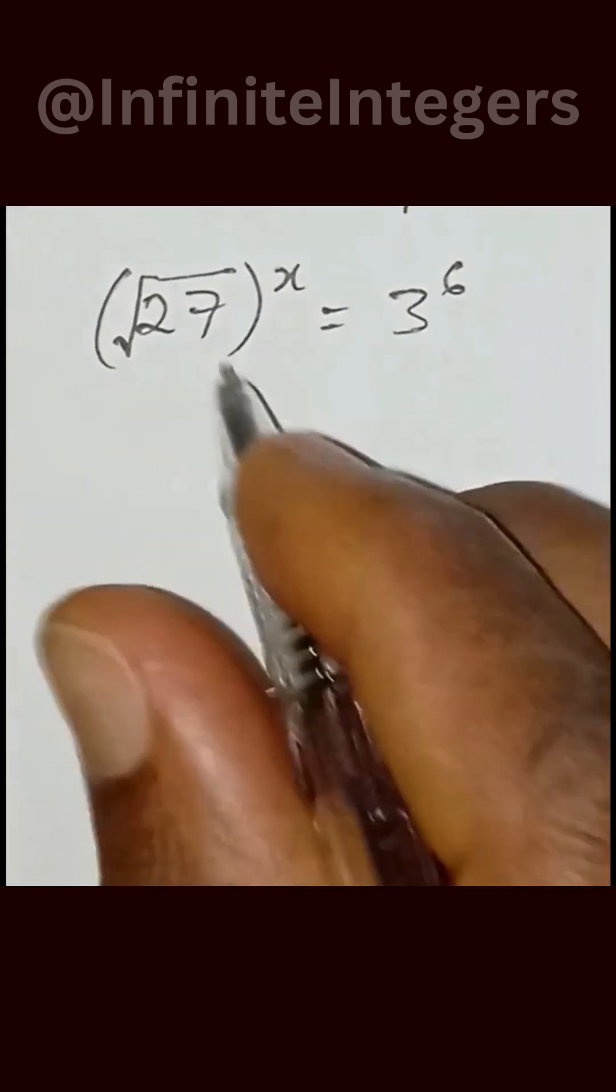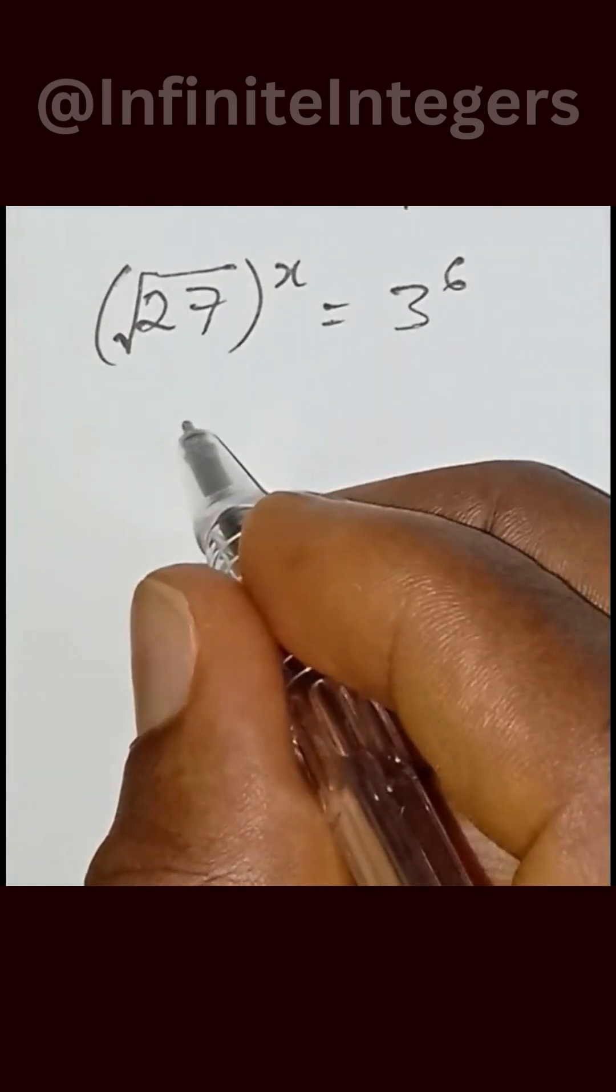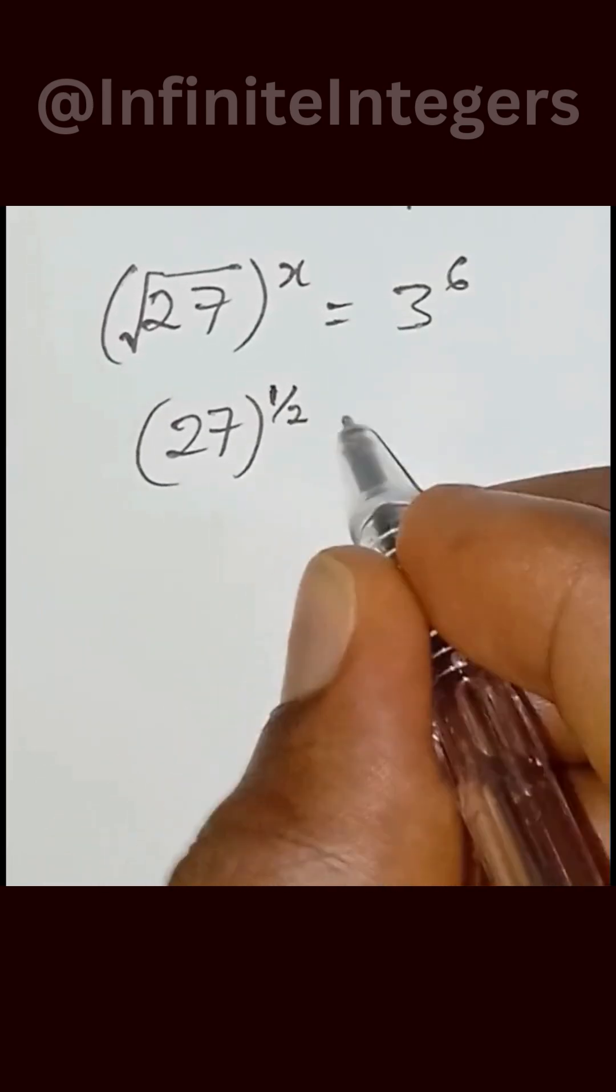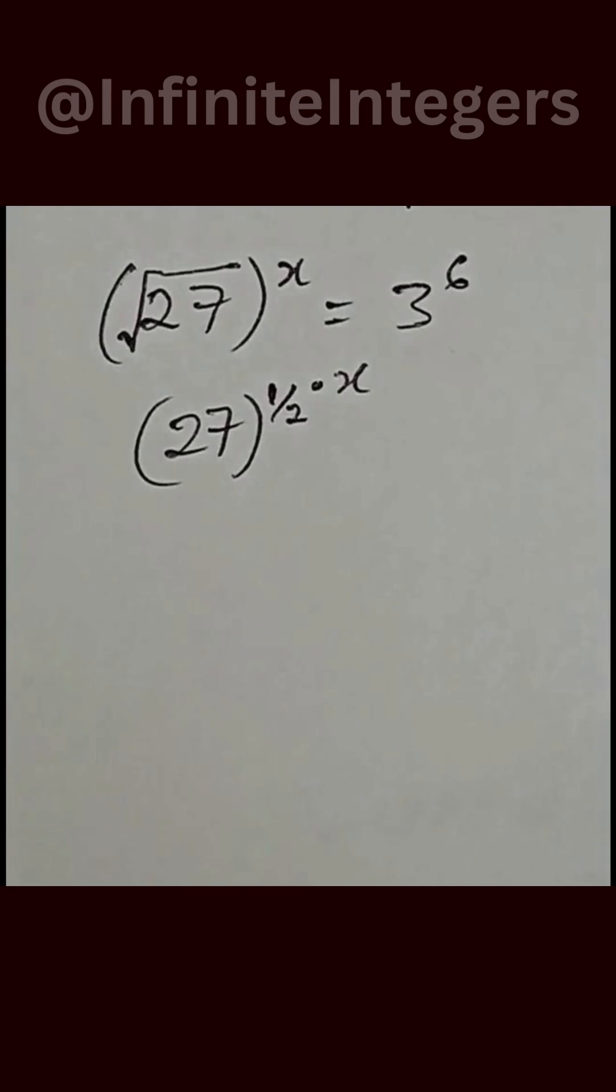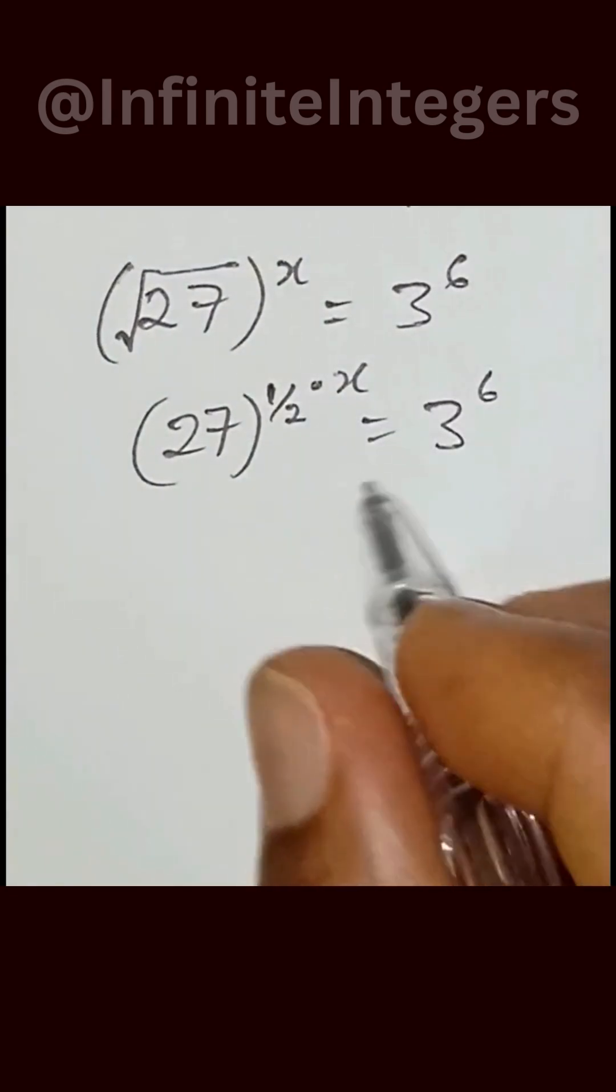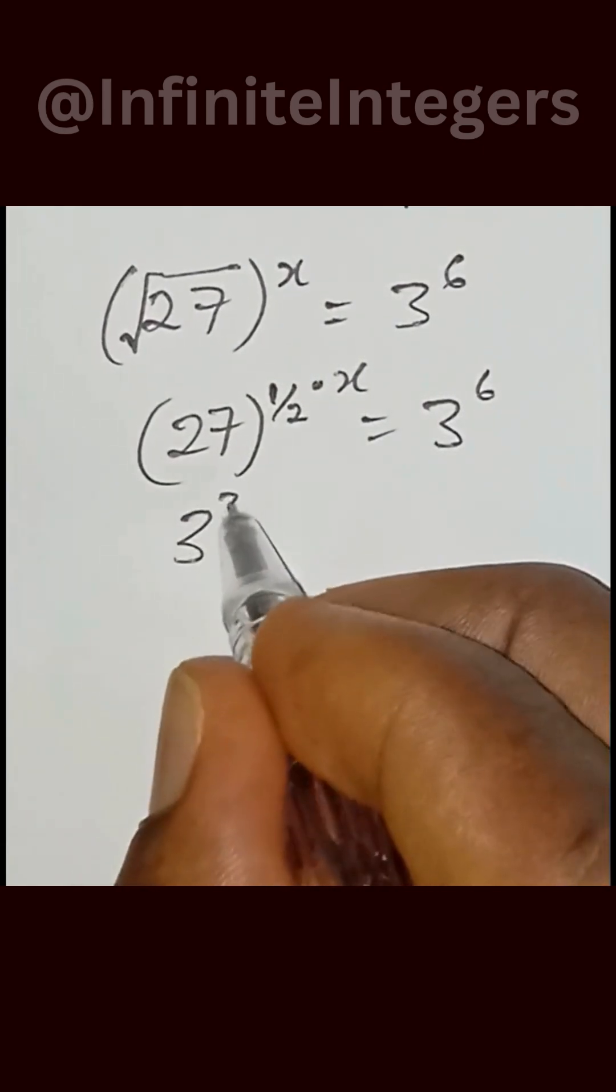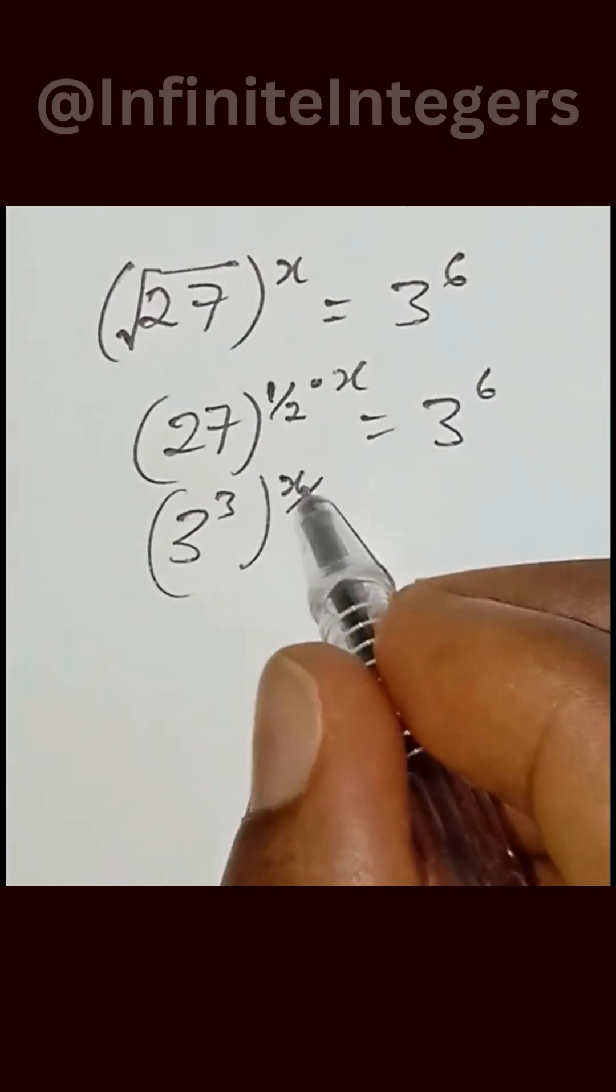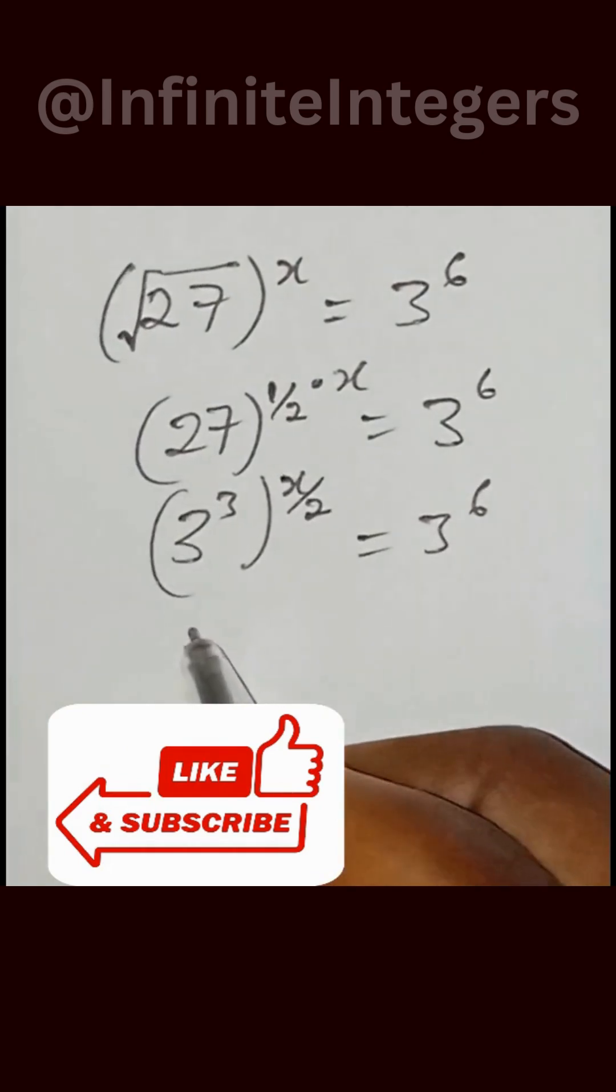How do you solve this? So all we need to do is to put this back as 27 in a bracket to the power of 1 over 2, then multiply by x, and that is equal to 3 to the power of 6. So we now have this reduced as 3 to the power of 3, then multiply by x over 2, equal to 3 to the power of 6. So we can now write this as 3 to the power of 3x over 2 equal to 6.